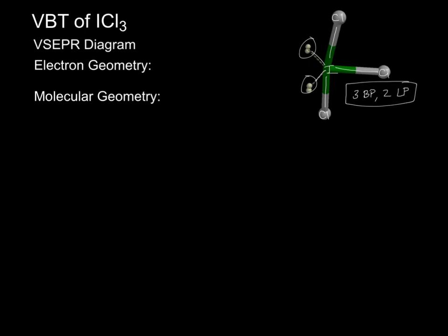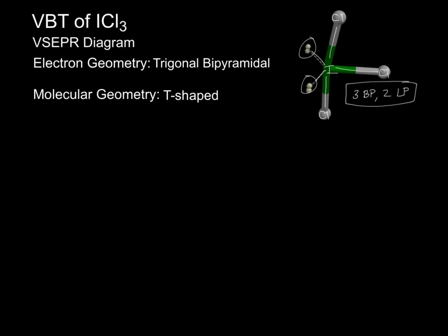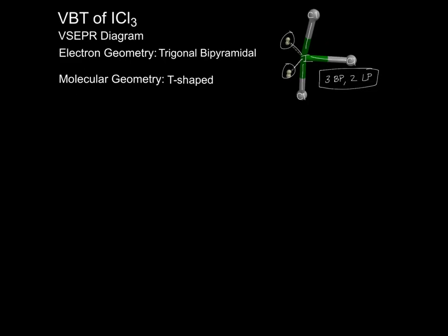With the information that we have learned previously through determining the Lewis diagram of iodine trichloride, this will then lead us to determining the valence shell electron pair repulsion, or VSEPR diagram. Iodine trichloride has trigonal bipyramidal electron geometry, as there are 5 electron pairs around its central atom. However, this molecule has T-shaped molecular geometry due to its 3 bonding pairs and 2 lone pairs. To draw its VSEPR diagram, put iodine as the central atom again, however the top and bottom bonds need to be slanted at the slightest bit.